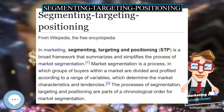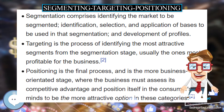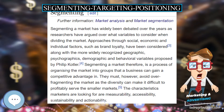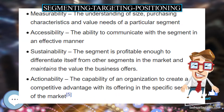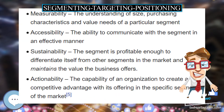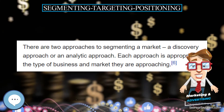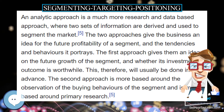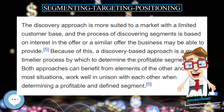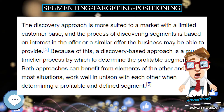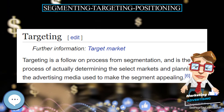Segmenting, targeting, and positioning — STP — is a broad framework that summarizes and simplifies the process of market segmentation. Market segmentation is a process in which groups of buyers within a market are divided and profiled according to a range of variables which determine the market characteristics and tendencies. The processes of segmentation, targeting, and positioning are parts of a chronological order for market segmentation.